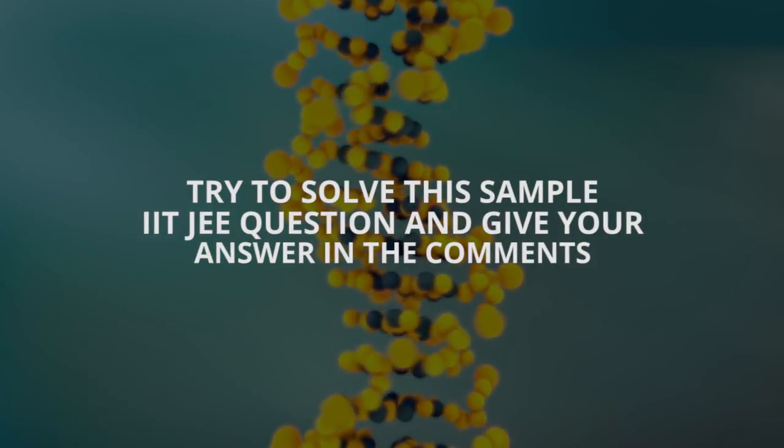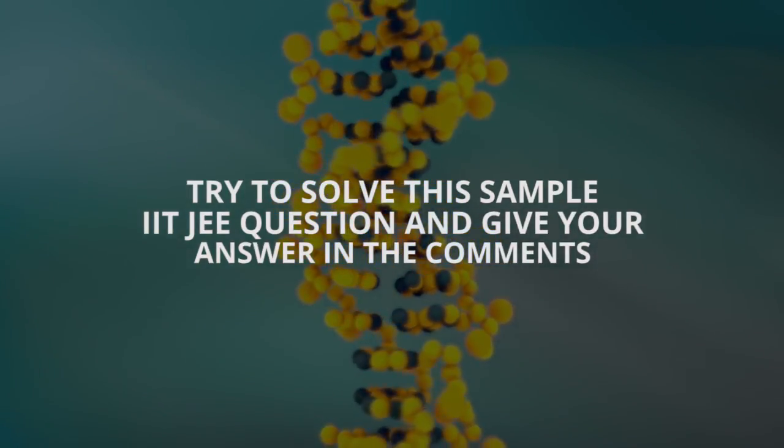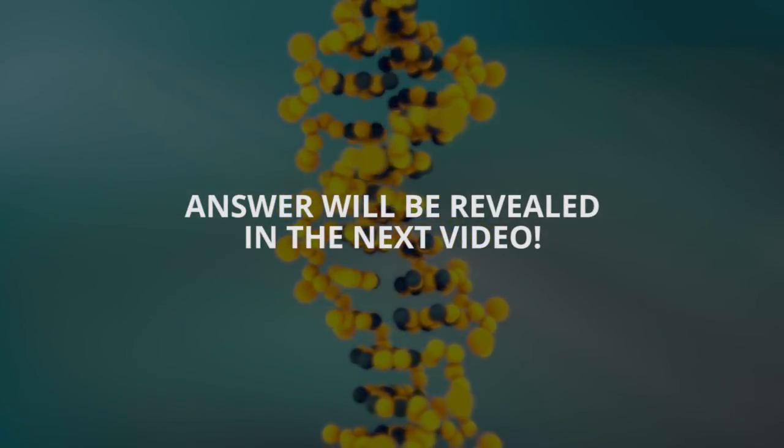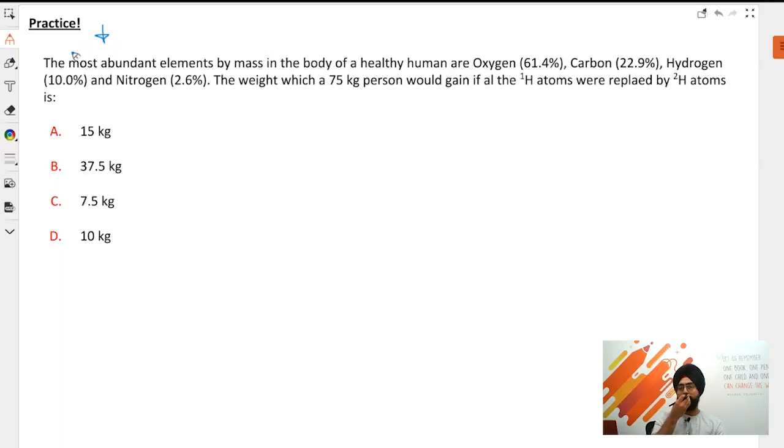I'll read out the question and I will solve it with you guys. This question says that the most abundant elements by mass in the body of a healthy human are oxygen, carbon, hydrogen and nitrogen. The weight which a 75 kg person would gain if all the hydrogen atoms of mass 1 were replaced by hydrogen atoms of mass 2.